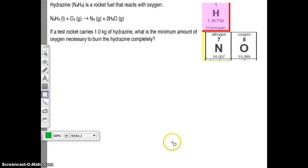Our next equation is hydrazine, a rocket fuel that reacts with oxygen. We have hydrazine as a liquid plus oxygen gas, it yields nitrogen gas plus water as a gas or steam. If a test rocket carries one kilogram of hydrazine, what is the minimum amount of oxygen necessary to burn the hydrazine completely? Start with what you know. We have one kilogram of N2H4, put it over one.